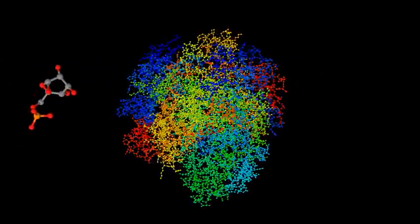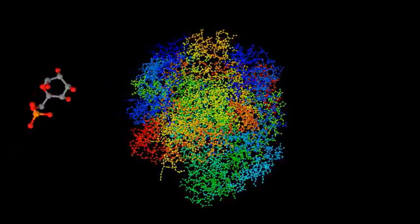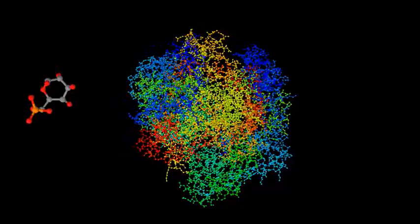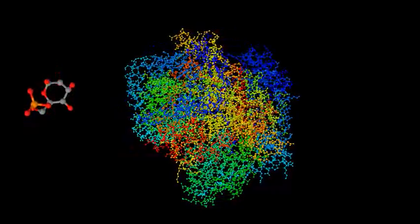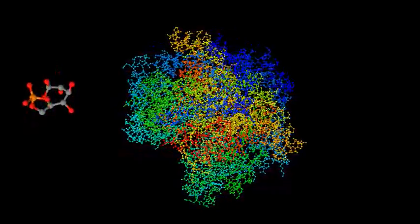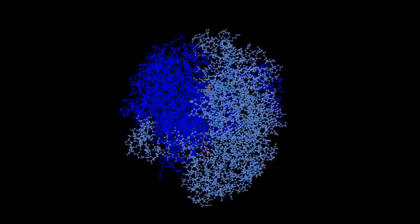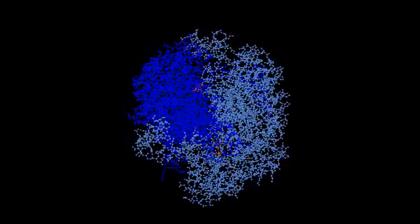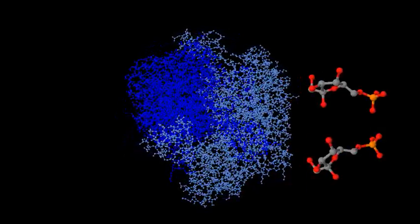This enzyme is phosphoglucose isomerase, and its job is to change the shape of the molecule we just made. It takes the glucose 6-phosphate and shuffles a few atoms and makes fructose 6-phosphate.